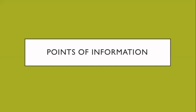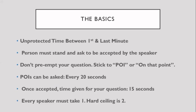A POI is fundamentally an interruption of your opponent's speech. This can be asked during what is known as unprotected time — between the first and last minute of the speech. When a speaker starts their speech, a timekeeper starts a timer. At the one minute mark, either a bell or a clap is heard, and then in a six-minute speech, at the five-minute mark another clap is heard. Anything between the two single claps is unprotected time, but anything before the first-minute clap and after the five-minute clap is known as protected time — during which you cannot ask any POIs.